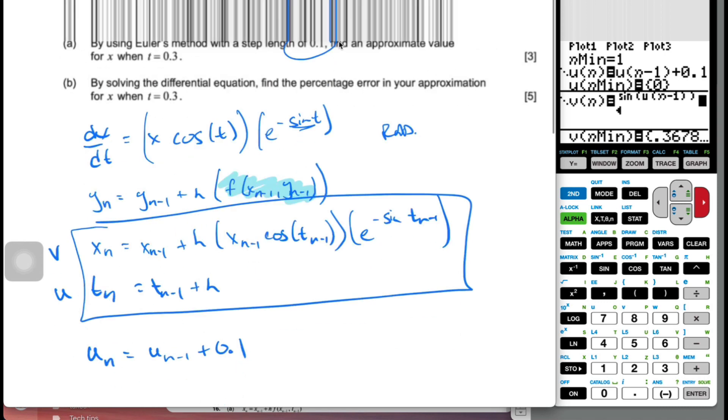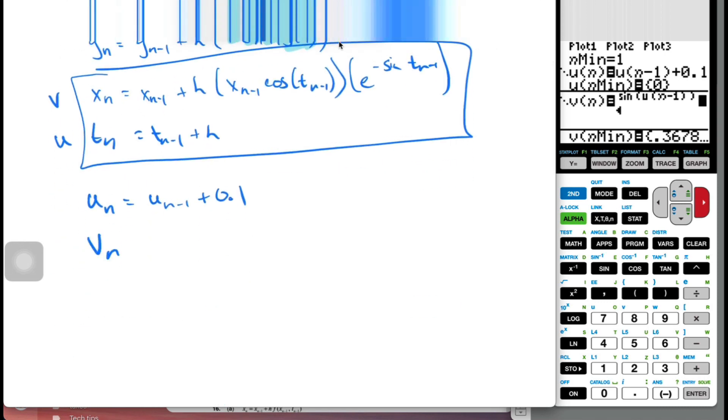And vn is equal to vn minus 1 plus 0.1 times vn minus 1 cosine un minus 1 e to the sine un minus 1. And so this is what I want to type into my calculator.